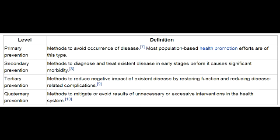Primary disease prevention prevents disease occurrence (e.g., HPV vaccination). Secondary disease prevention is early detection (e.g., Pap smear). Tertiary disease prevention reduces disability from disease (e.g., chemotherapy). Mnemonic: PDR — Prevent, Detect, Reduce disability.